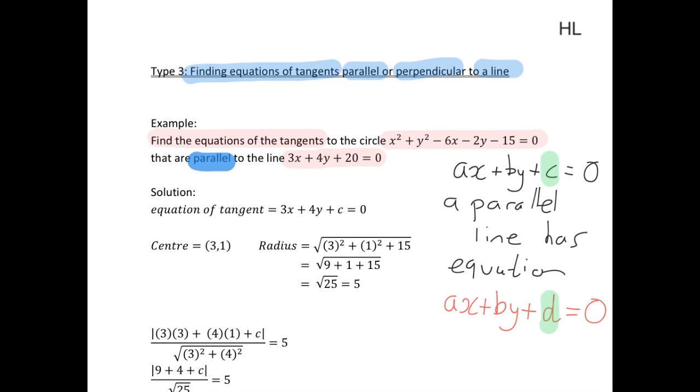So the first step in the solution to this question is to write the general equation of a tangent to be 3x plus 4y, so the same as we have above, plus some other constant, let's call it c. So the whole goal of this question from now on is going to be to find out what the value of this c here is.